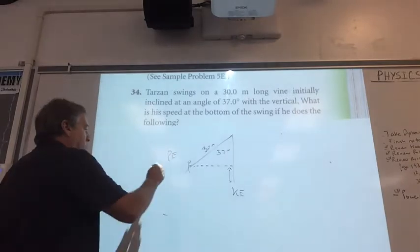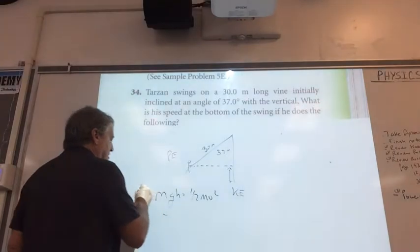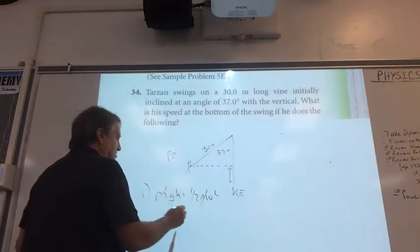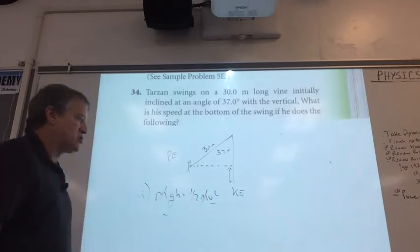This is an easy one. We know it's mgh equals one-half mv squared. The masses cancel, we know what g is, we're looking for v. All I got to do is know h.